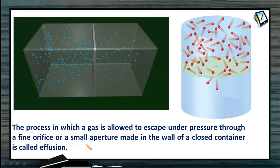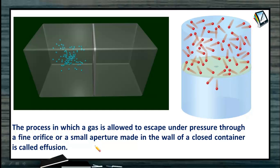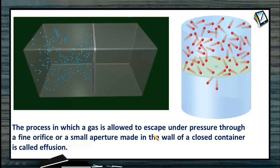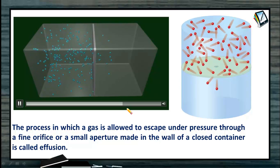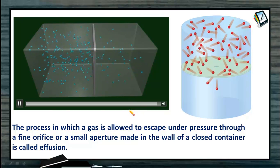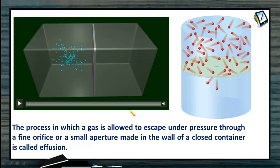That is the basic difference between diffusion and effusion. Diffusion is the spontaneous intermixing of gases to form a homogeneous mixture — irrespective of the earth's gravitational force, gas molecules move randomly and occupy the entire available space. And if this diffusion takes place through a small aperture under high pressure, that is called effusion.